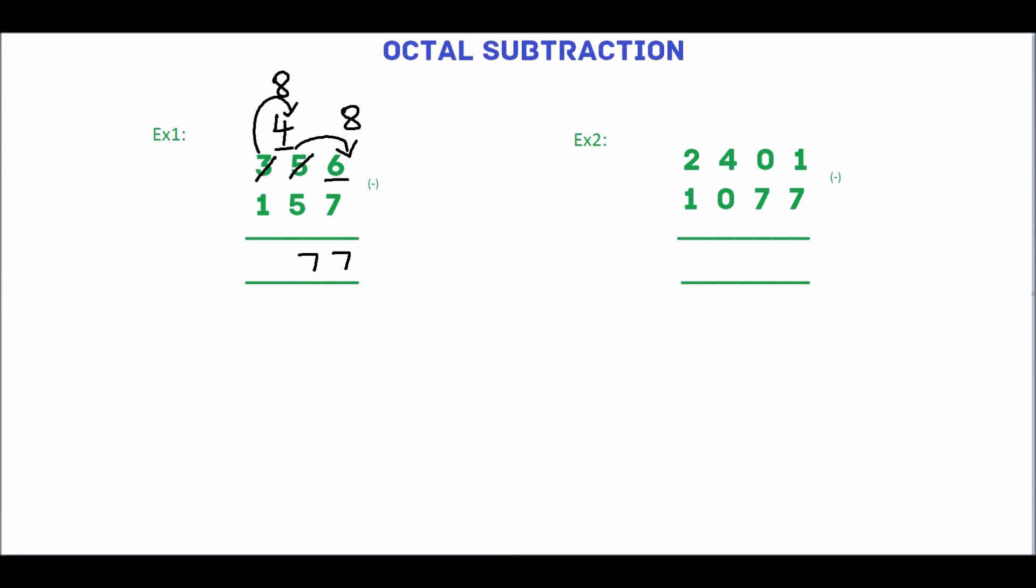3 has given the borrow so it will become 2. 2 minus 1 is 1. 1, 7, 7 is the answer.